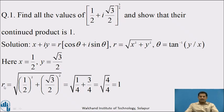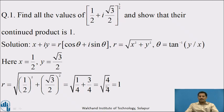Now let us calculate r. r = √((1/2)² + (√3/2)²) = √(1/4 + 3/4) = √(4/4). We can cancel 4 from numerator and denominator to get √1 = 1.